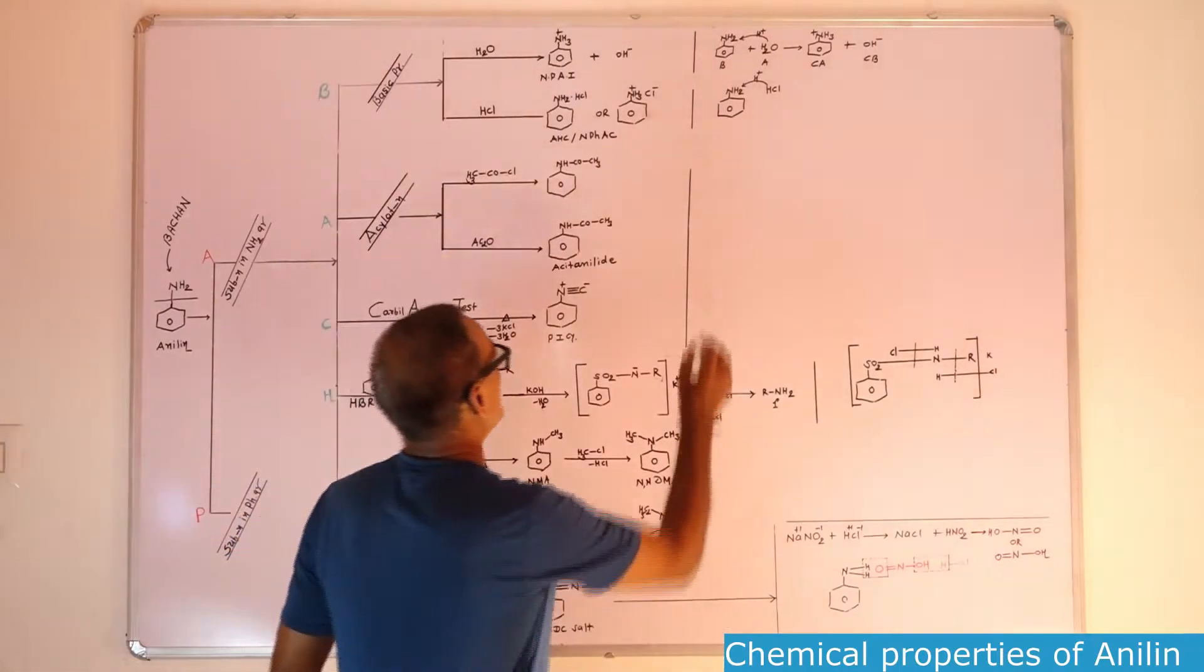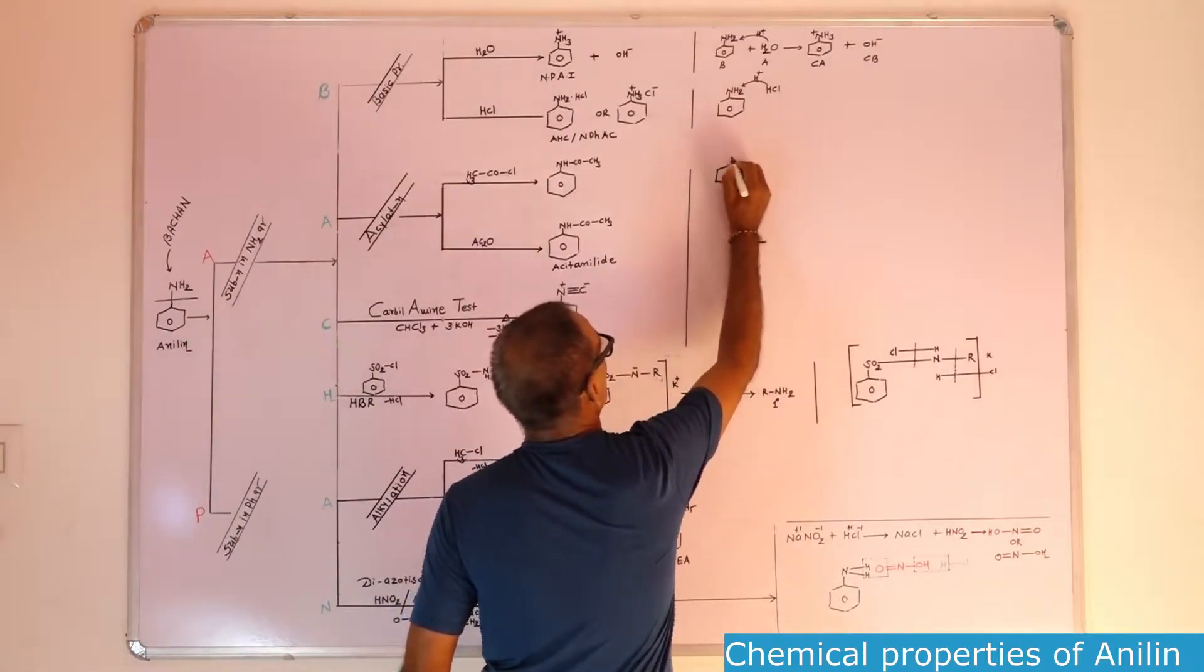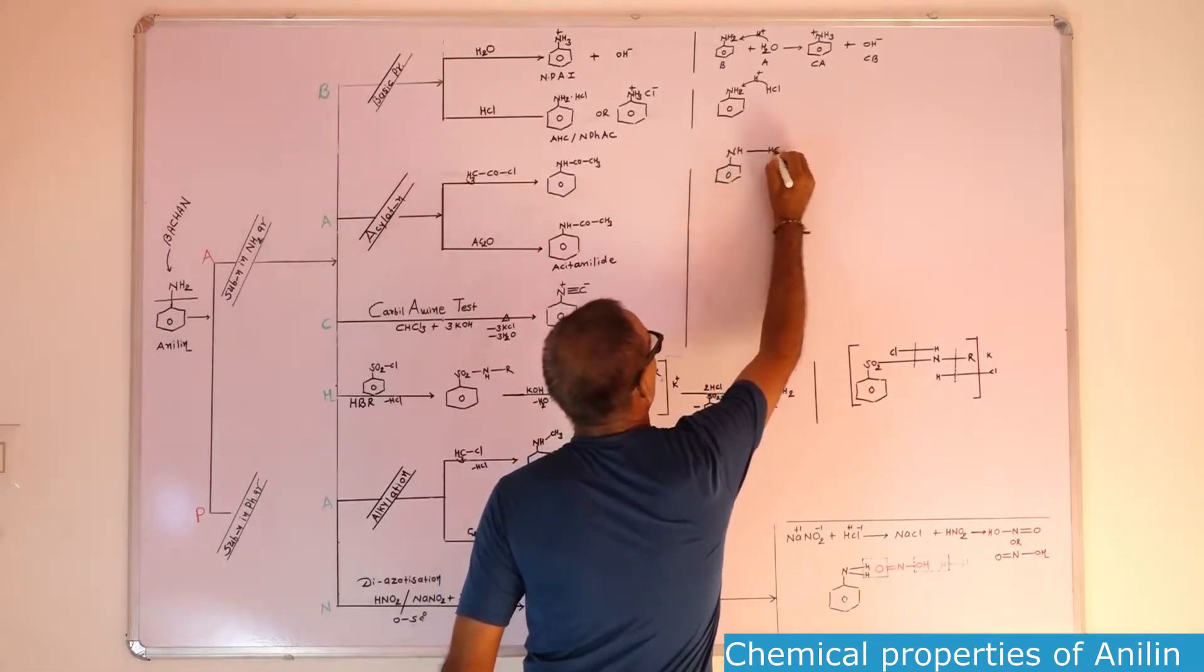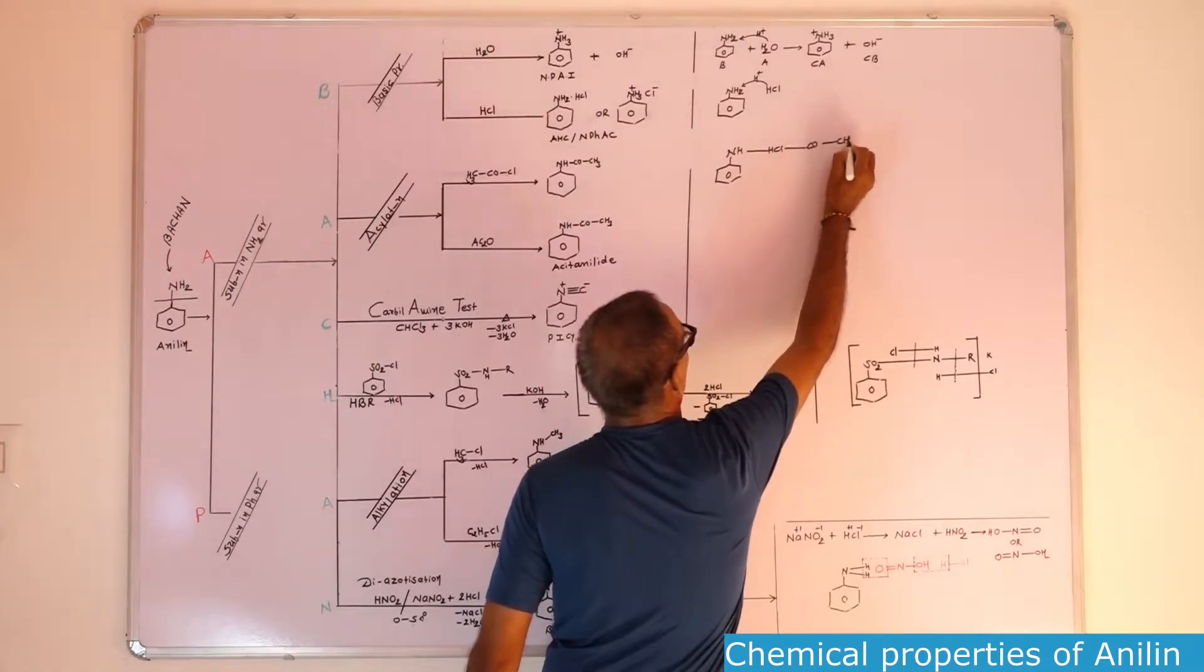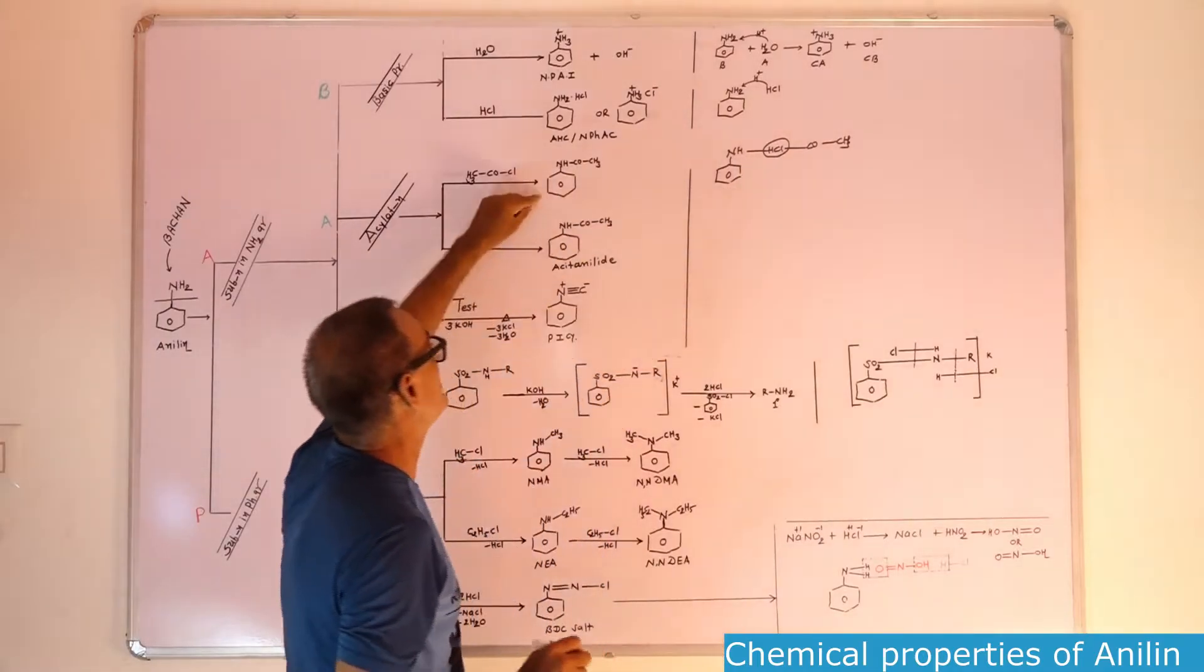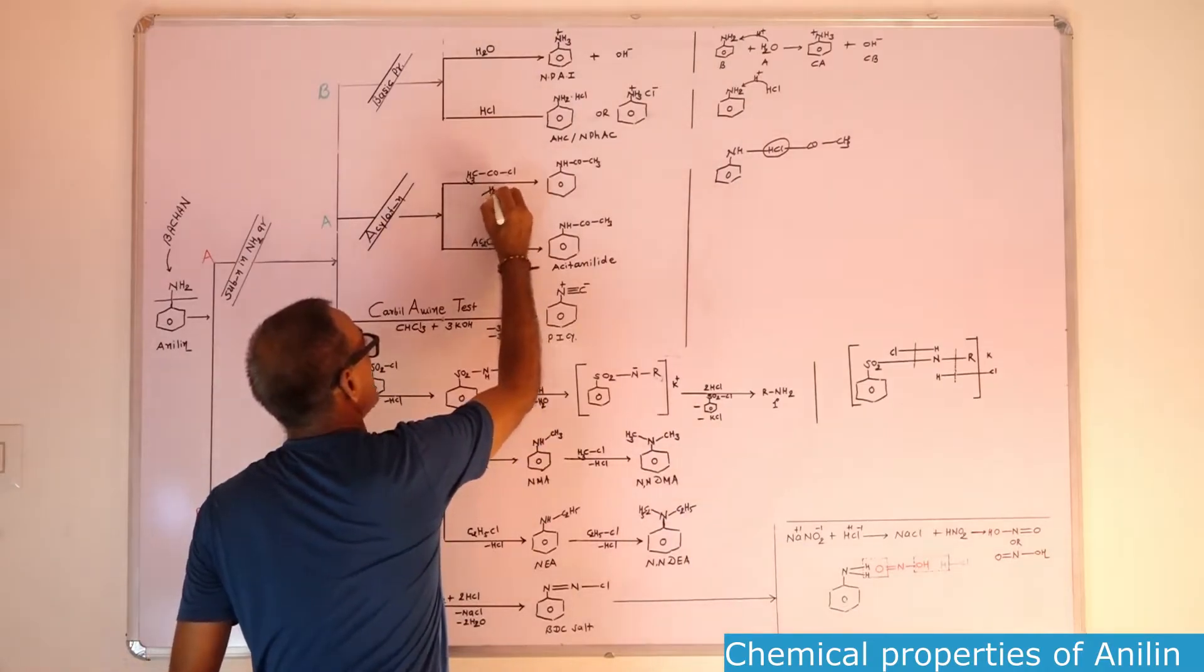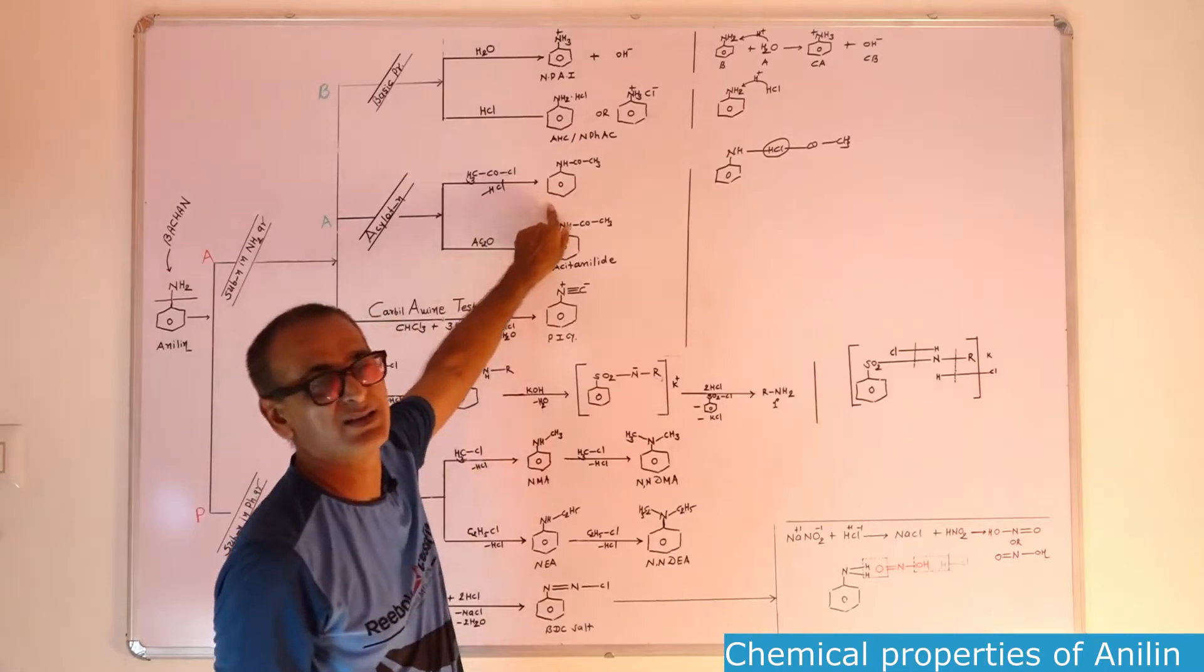In acyl chloride, what is the reaction mechanism? Benzene having NH2, NH single bond H, Cl single bond CO single bond CH3. Then HCl will be removed as a byproduct. Directly acyl group will be added to the nitrogen atom. Our product is acetanilide. During this reaction HCl will be byproduct and our main product is acetanilide.